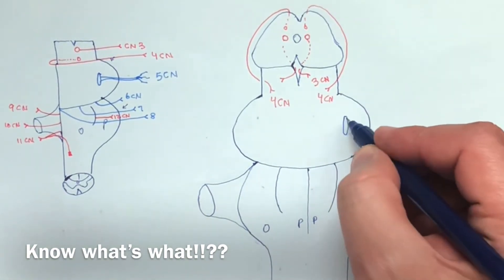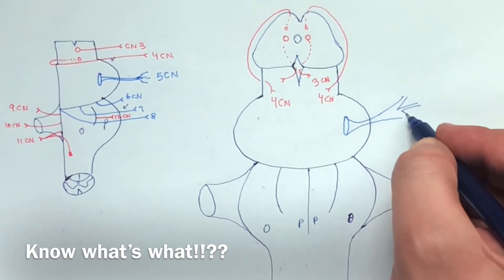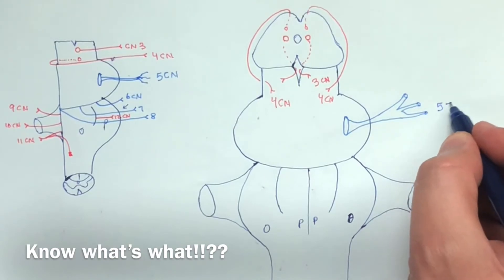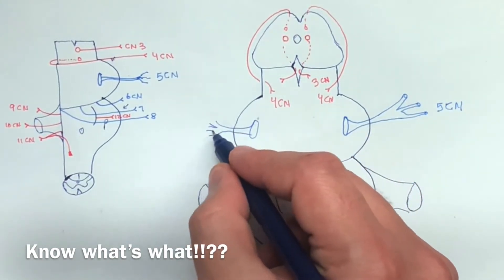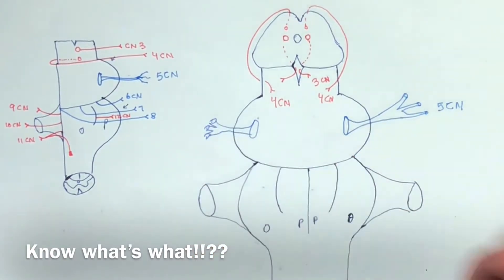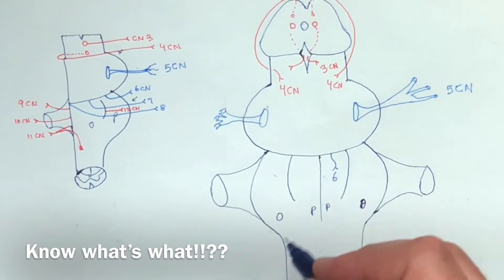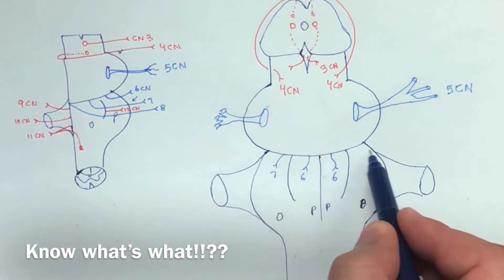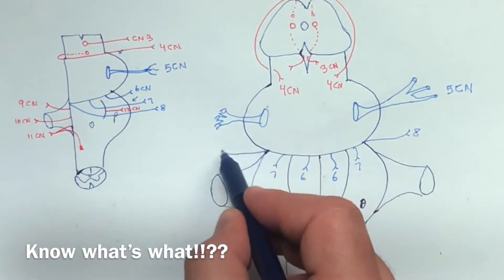The fifth cranial nerve — the trigeminal — emerges from the pons and has three branches. There are two fifth cranial nerves, so we draw one on each side. From the pyramids, you have the sixth cranial nerve on each side, then the seventh cranial nerve, and the eighth cranial nerve.